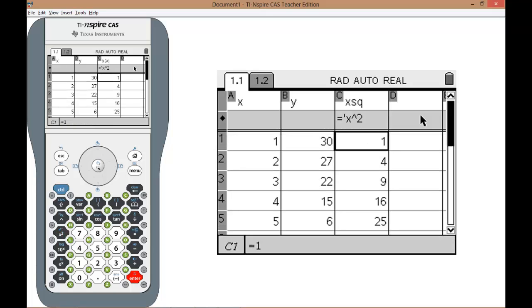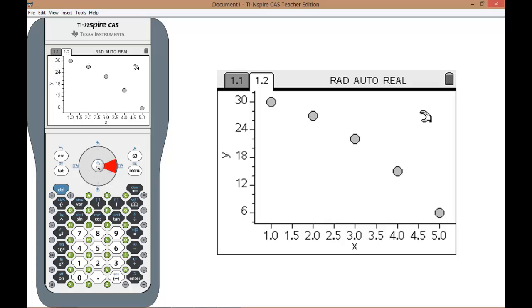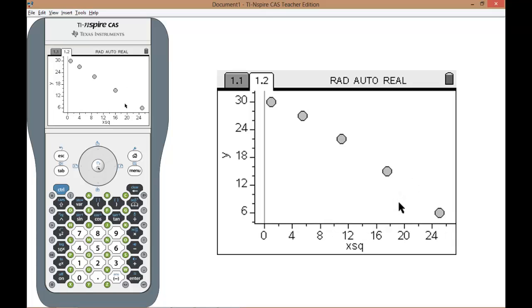Press enter and those data points are populated for you. Now we go back to the data and analysis page, CTRL to the right, come down to the bottom here and change the x variable to the x squared variable. And what that does is as you can see that has the effect of linearising the data.